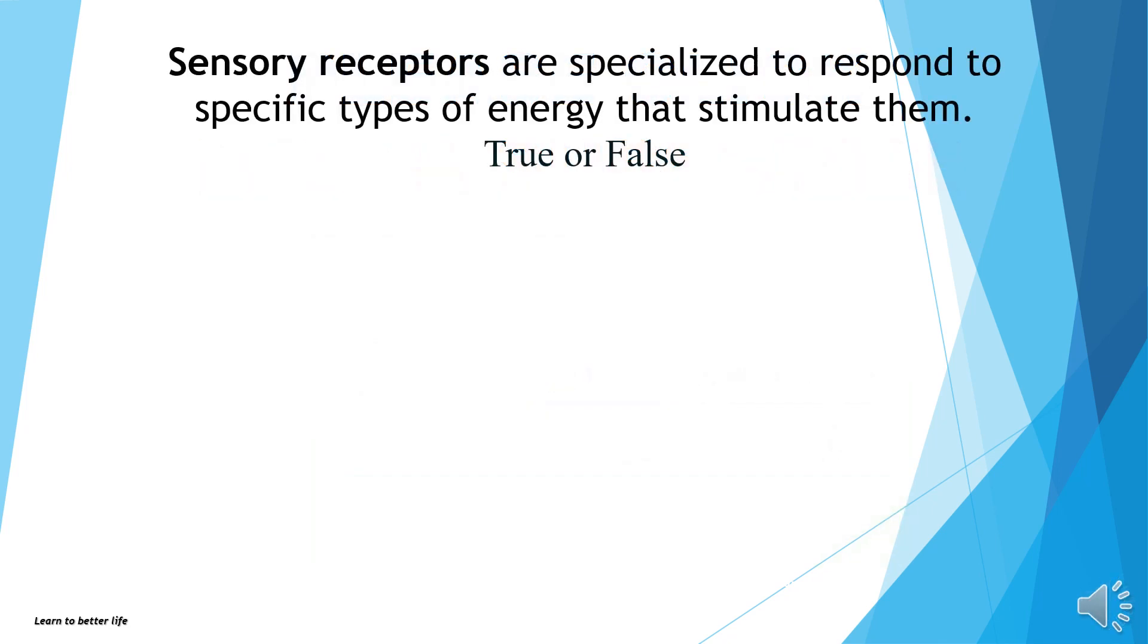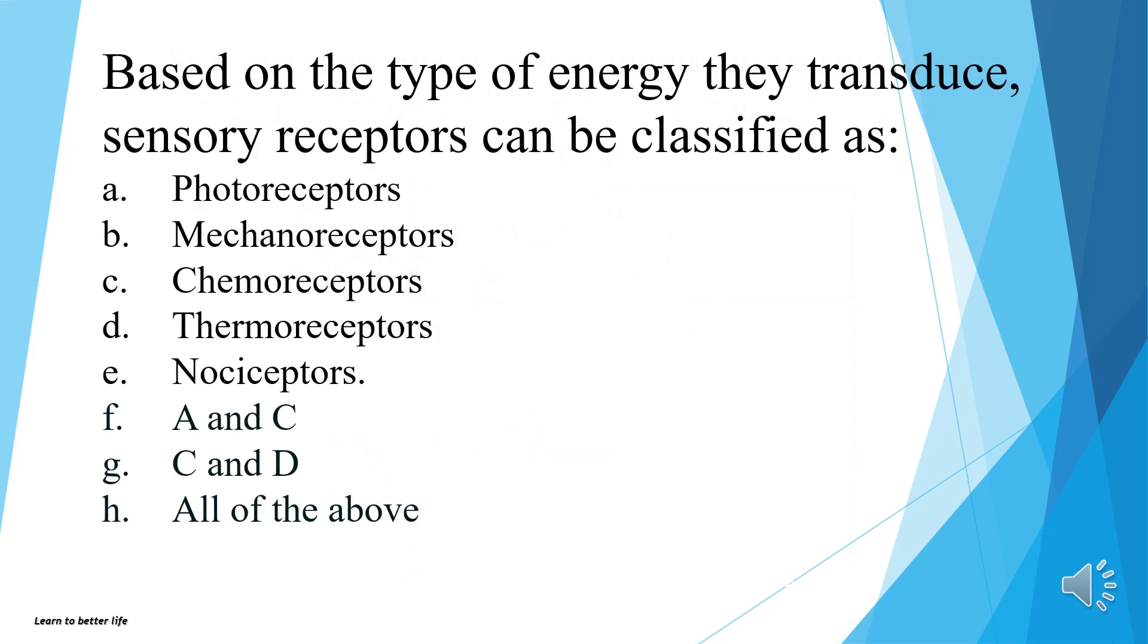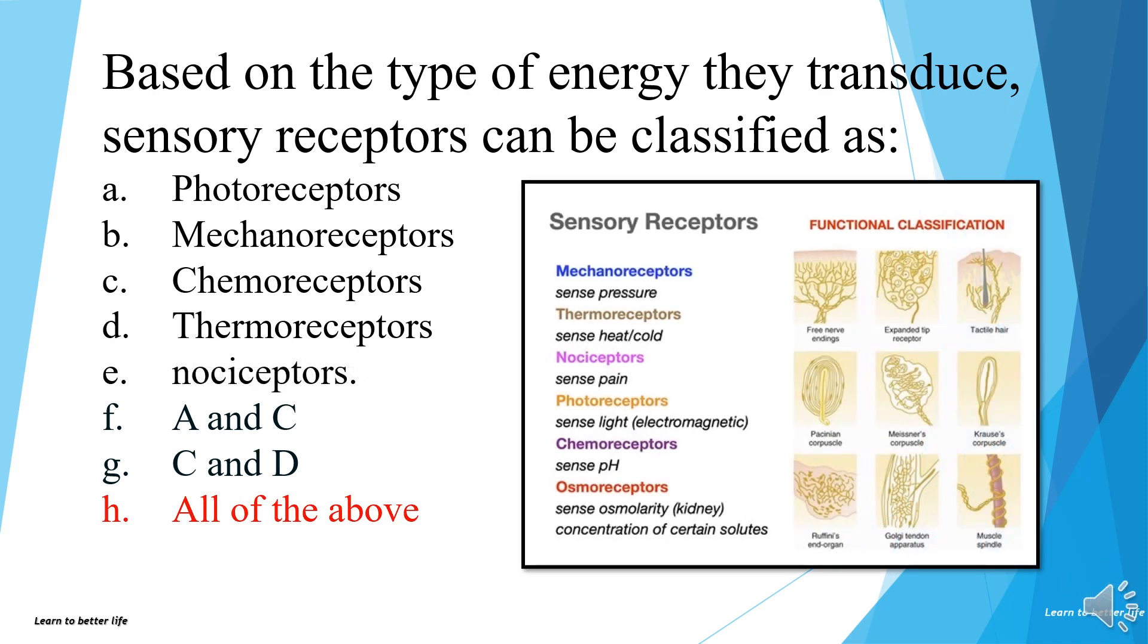Question 1. Sensory receptors are specialized to respond to specific types of energy that stimulate them. True or false? The answer is true. Based on the type of energy they transduce, sensory receptors can be classified as photoreceptors, mechanoreceptors, chemoreceptors, thermoreceptors, and nociceptors. The answer is all of the above.